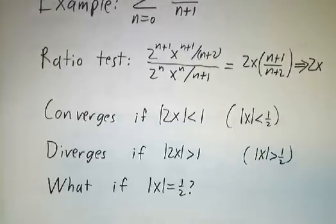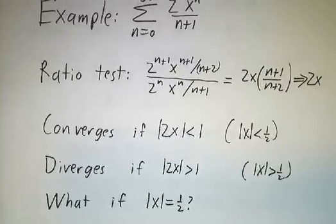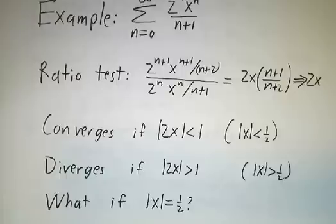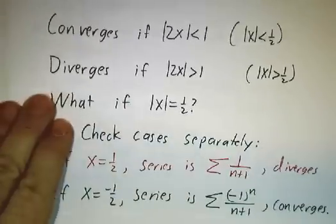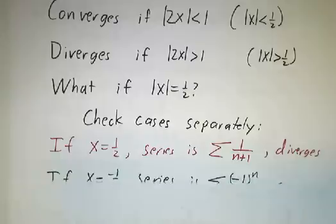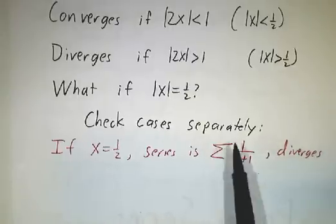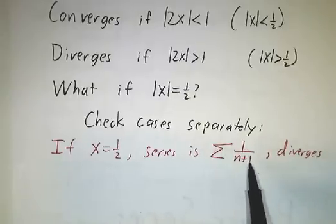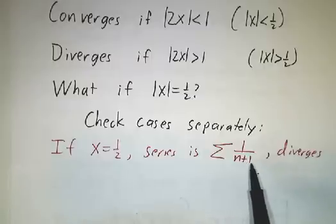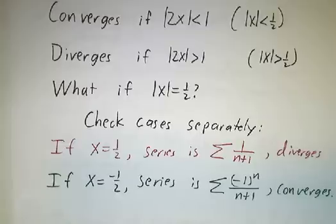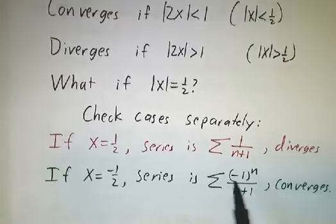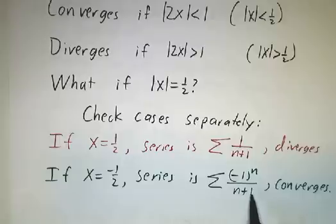Well, what about the boundary case? What if the absolute value of x is equal to 1 half? Well, there's no set rule for figuring out what happens in the boundary case. You have to check each case separately. In this case, if you have x equals 1 half, then all the terms are positive and you wind up with the sum of 1 over n plus 1. That's a harmonic series and we've seen that that diverges. If x is minus 1 half, you wind up with an alternating series and it converges.